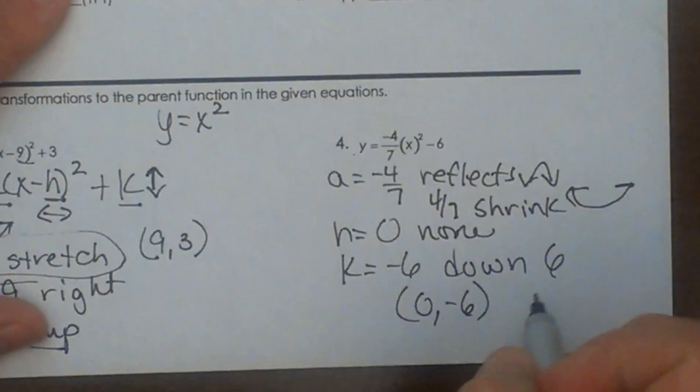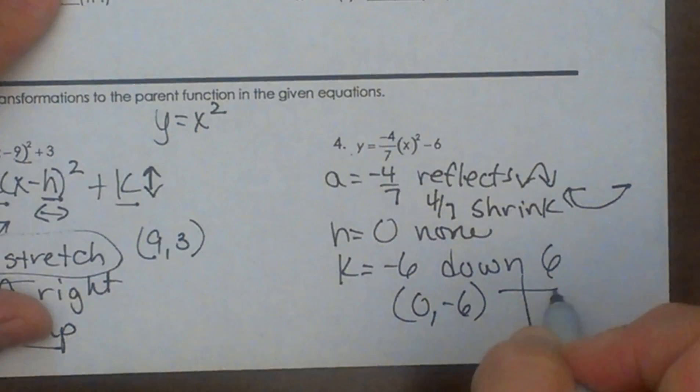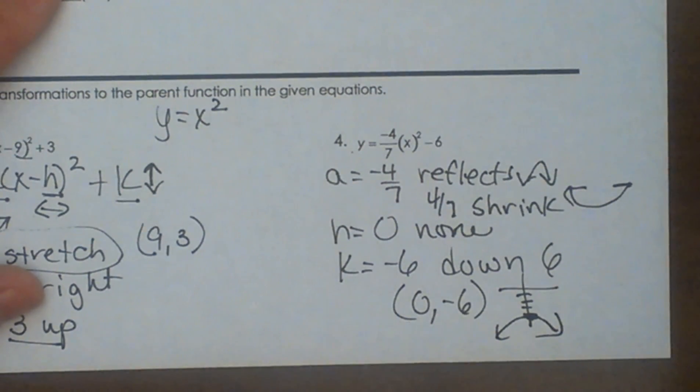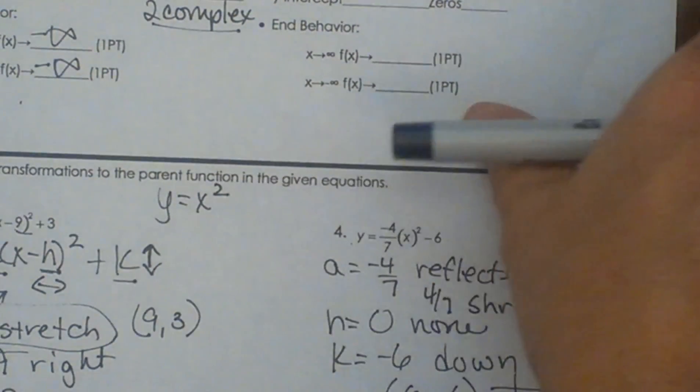So there you go. If I were just to sketch it, I would draw 0, negative 6, and it would be a down-facer, kind of wide, like that. So there you go. There's some transformations.